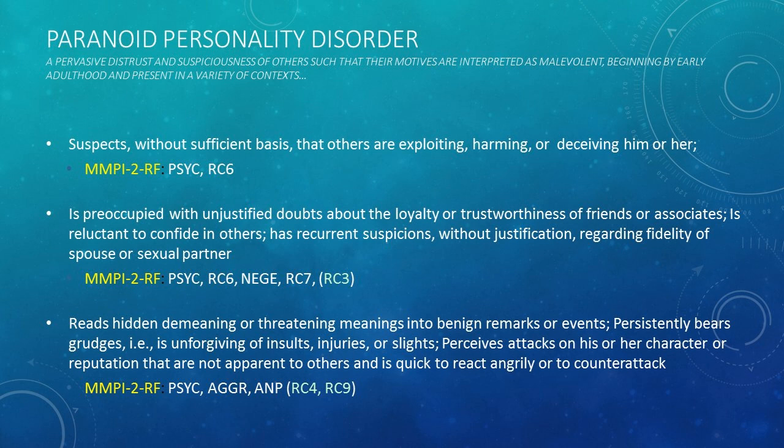I've broken the criteria for paranoid PD into essentially three groups. Starting with the criterion of suspecting without sufficient basis that others are exploiting, harming, or deceiving him or her — RC6 is the scale most directly relevant to interpersonal suspiciousness and belief that others are victimizing him or her. More broadly, psychoticism, our PSY-5 scale reflecting a dispositional proclivity toward breaking from reality, would be relevant to this disorder and in fact is relevant to pretty much all of the criteria underlying this pathology.